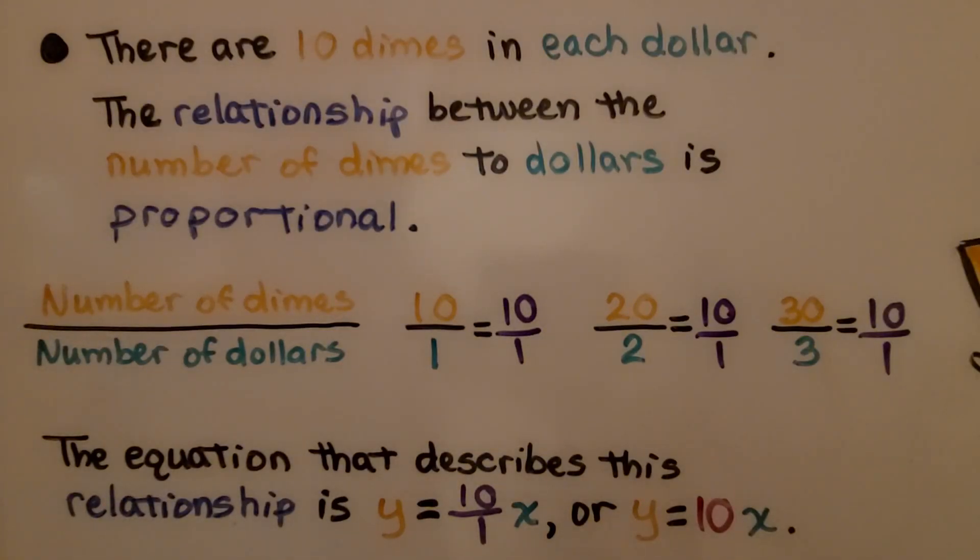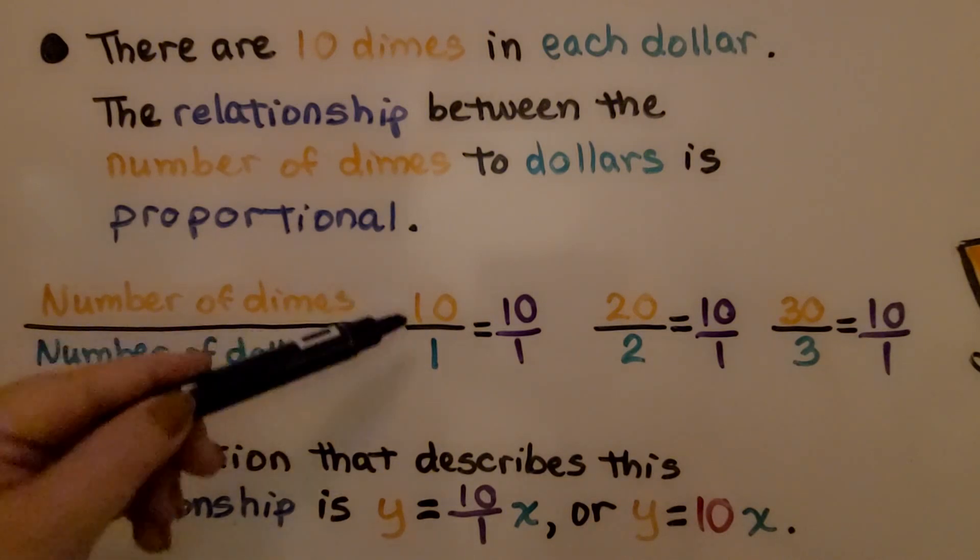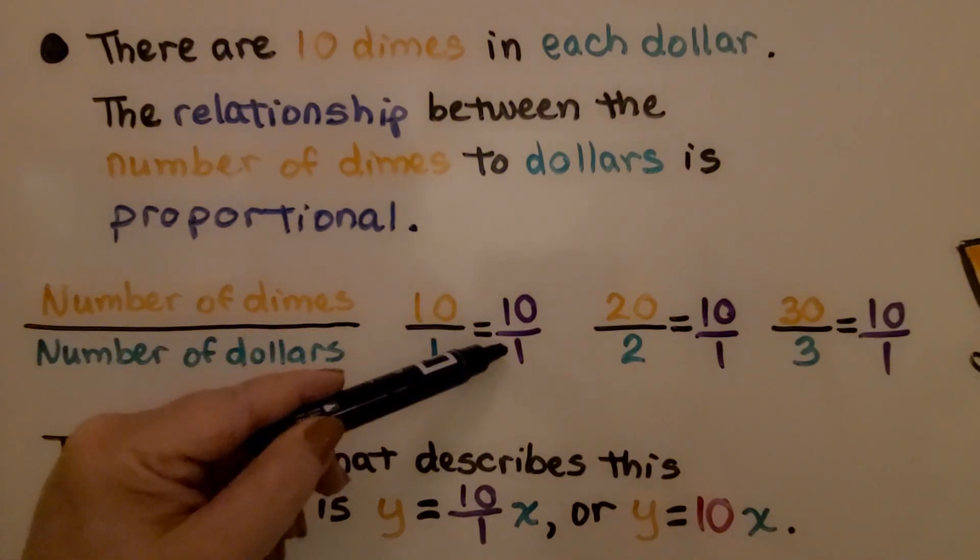There are 10 dimes in each dollar. The relationship between the number of dimes to dollars is proportional. We have the number of dimes and the number of dollars. 10 dimes is $1. Our ratio is 10 to 1.